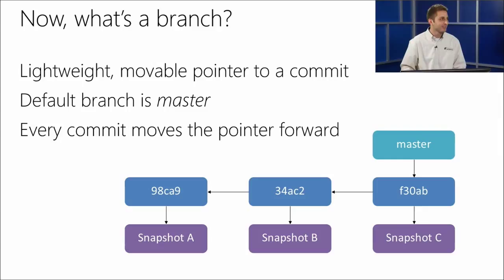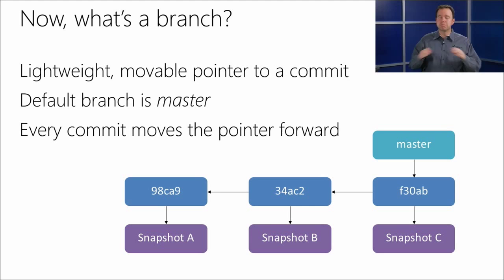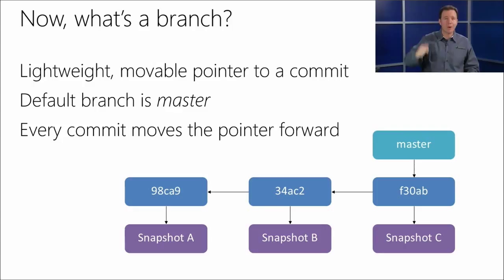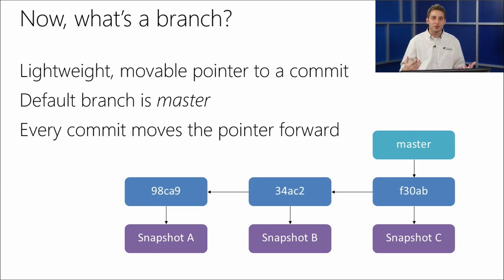The hardest part about remembering this is that a branch is literally just a file. When you think of branches in some other version control systems, they are literally another folder or another stream. Whereas in Git, it's just a file with 40 characters in it — a pointer to a commit. That's the thing that blows your mind when you first start.